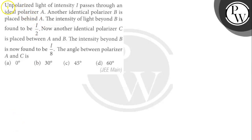Hello, let's read the question. The question says here, unpolarized light of intensity I passes through an ideal polarizer A. Another identical polarizer B is placed behind A. The intensity of light beyond B is found to be I by 2.